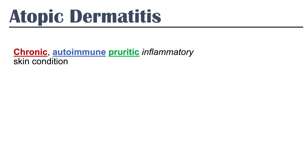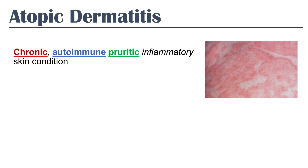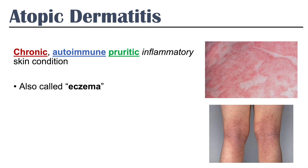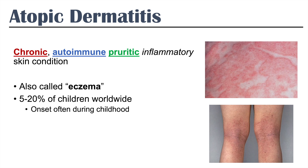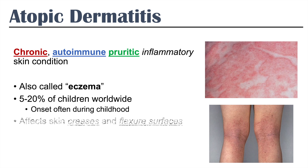Atopic dermatitis is a chronic, autoimmune, pruritic, inflammatory skin condition. This condition is also called eczema, and it's so prevalent that approximately 5–20% of children worldwide are affected, with onset often during childhood. Atopic dermatitis has a predilection for affecting skin creases and flexure surfaces.